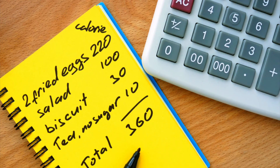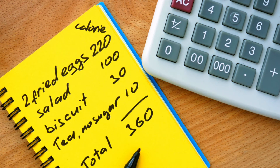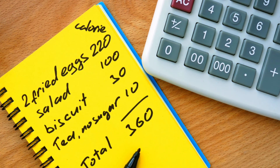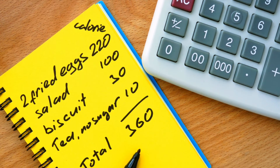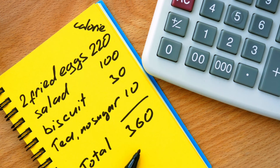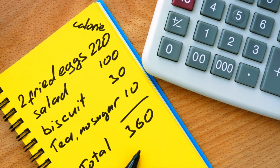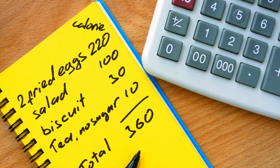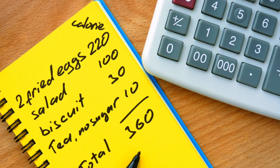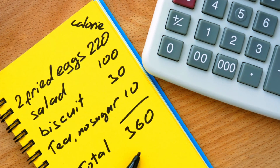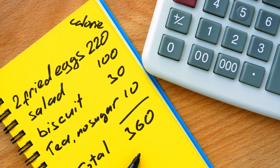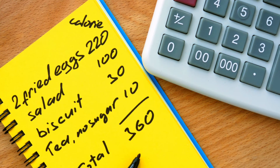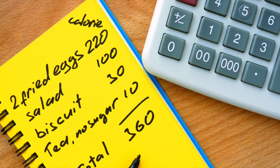Now, how do you calculate how many calories you are consuming per day? There are three ways. The first is simple — you can just search in Google for the calories of dishes you are preparing. But the problem is your way of cooking will differ from theirs, so the calories will also be different.